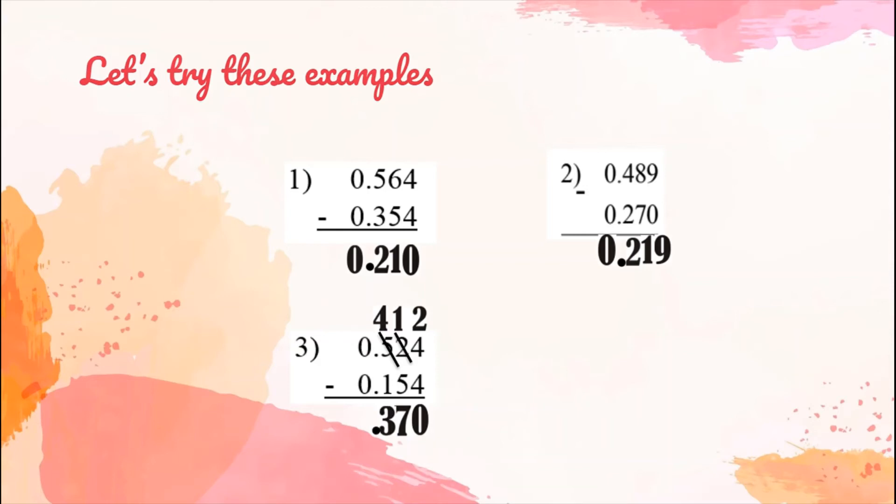Align our decimal point. 0 minus 0, the answer is 0. For our final answer, we have 0.370.